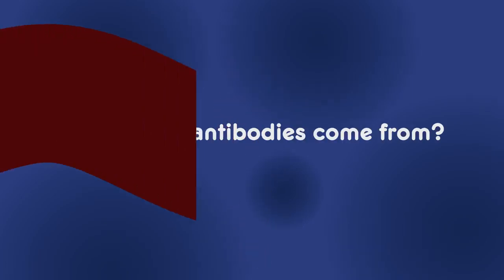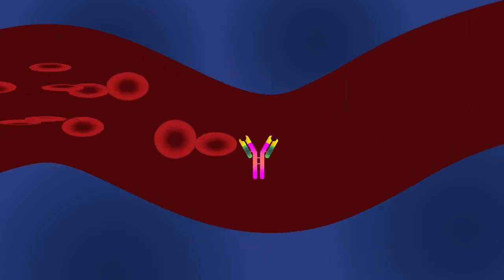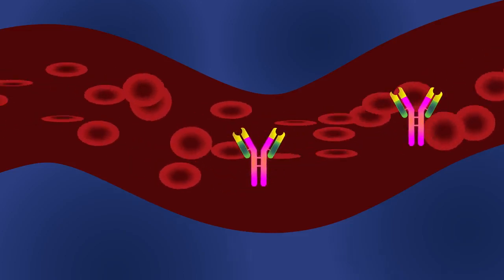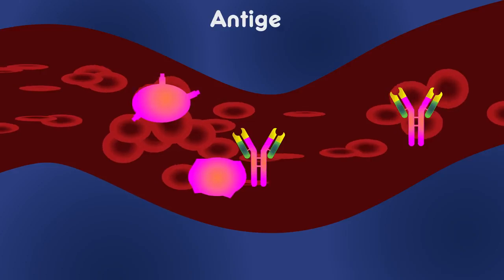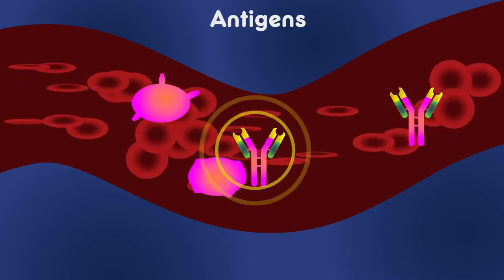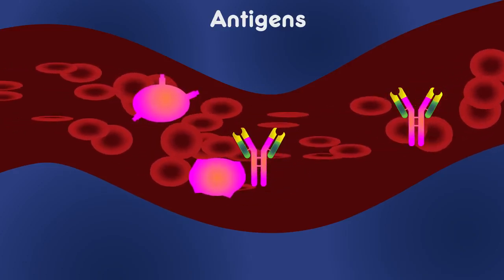So where do antibodies come from? Antibodies circulate in the bloodstream and can appear anywhere throughout the body. Their function is to recognize bad agents called antigens and then trigger chemical reactions to remove the antigens.